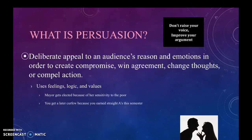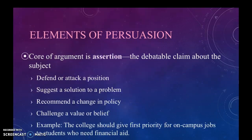There are two examples illustrating the idea of feelings, logic, and values. A mayor may get elected because of her sensitivity to the poor — that's using emotion. Someone may get a later curfew because they earned straight A's — that's a more logical argument. These are things that happen because of persuasion.